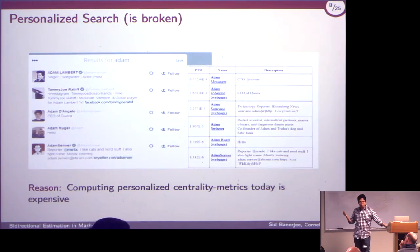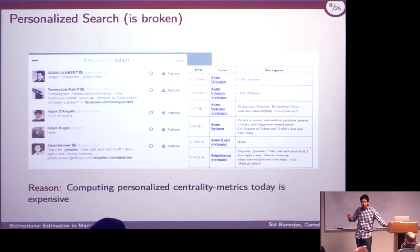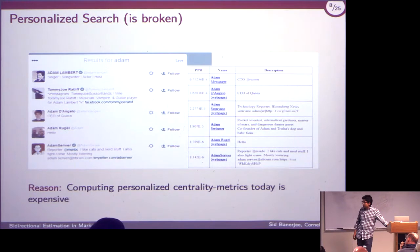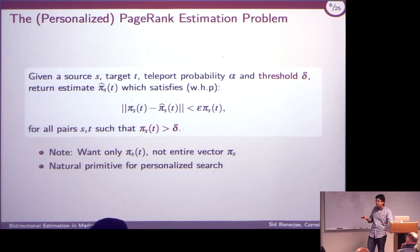The search on the right — sorted by personalized PageRank — is much more useful. The left is a generic search; the right is what Peter is actually looking for when he searches for Adam. The natural question is: why isn't Twitter doing this? The answer is that current methods for calculating personalized centrality metrics are just not fast enough. Also, Twitter gave only 100 Adams — not a billion users. I needed to sort only those 100 people, not estimate PageRank for everyone.